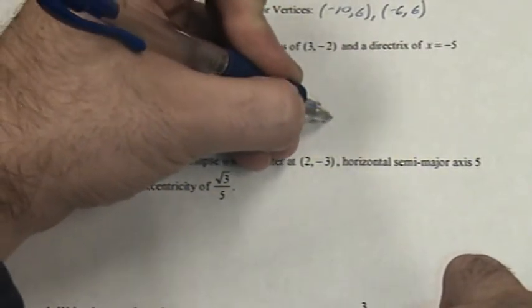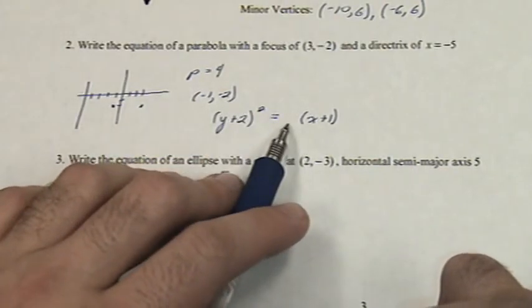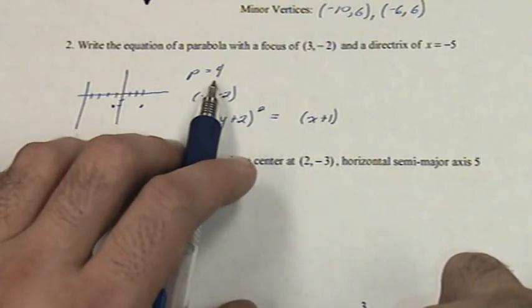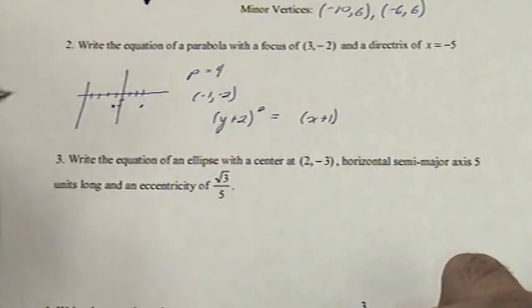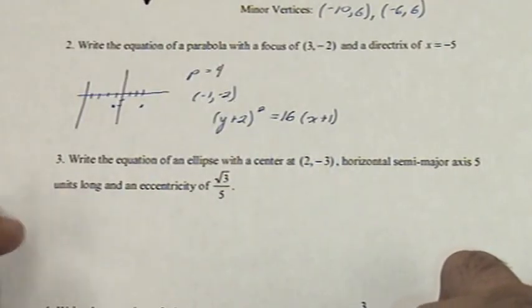and I'll write, x plus 1, minus negative 1. Right here will be 4p. We already said p is a positive 4. So we multiply that by 4 and get 16. And this is the equation for the parabola that meets the criteria of the question.